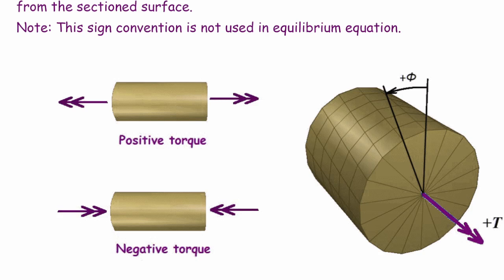Now let's solve a problem to understand how to implement the equations given for angle of twist and using the correct sign for that.